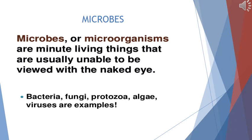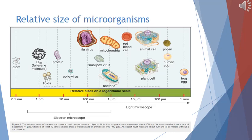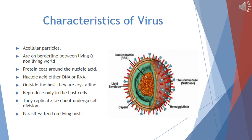Bacteria, fungi, protozoans such as amoeba, algae, and viruses are all examples of microorganisms. Let's compare the relative size of microorganisms. As you can see, the frog egg is one millimeter in diameter — much larger than the human egg, pollen grain, and animal and plant cells, whose size ranges from 10 to 100 micrometers. Mitochondria and bacteria, which are one micrometer in size, may appear as a small dot in the light microscope, but their detailed structure was only revealed by the discovery of the electron microscope.